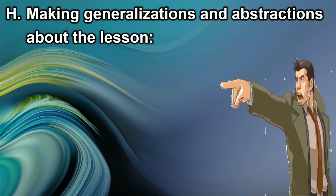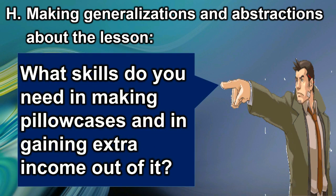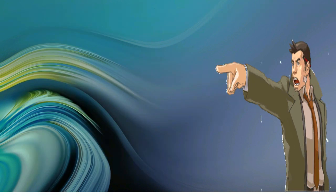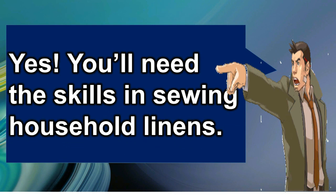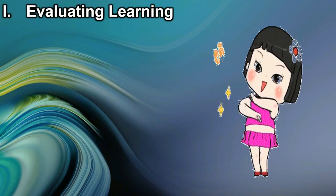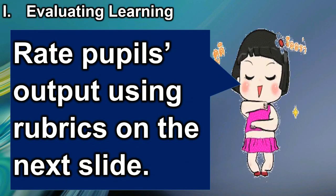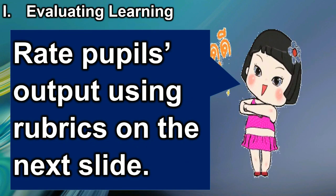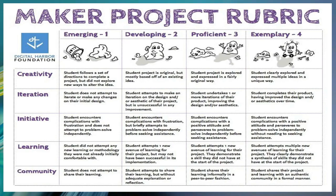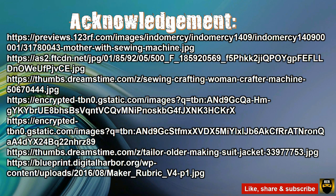Making generalizations and abstractions about the lesson: what skills do you need in making pillowcases and in gaining extra income? You'll need the skills in sewing household linens. For our evaluation, we will use a rubric which can be seen on the next slide. You also have the option to use another rubric. This is the acknowledgement portion — you can see the sources of the different images used in this video. See you again for the next video. Don't forget to like, share, and subscribe!